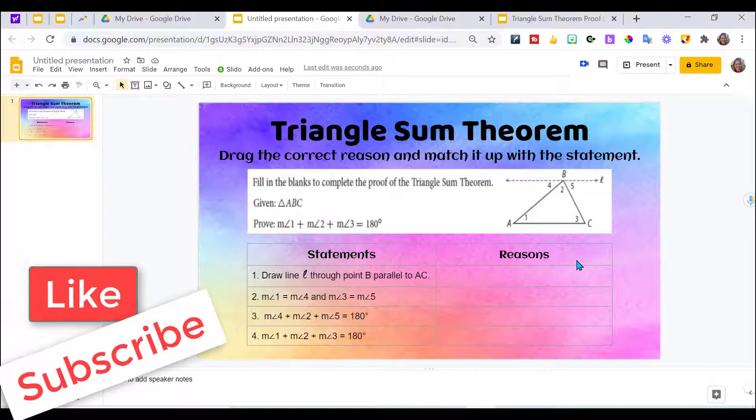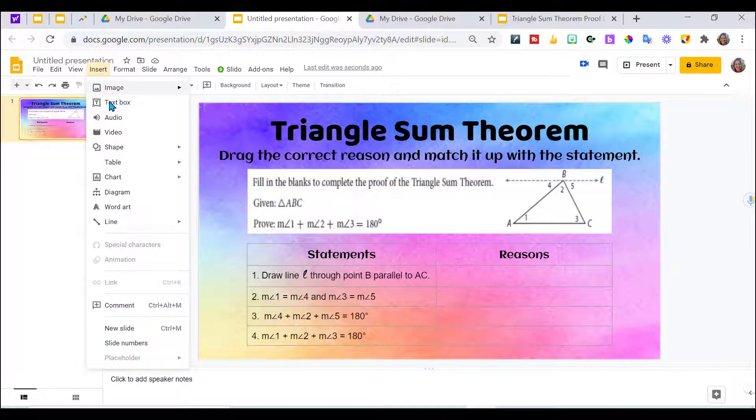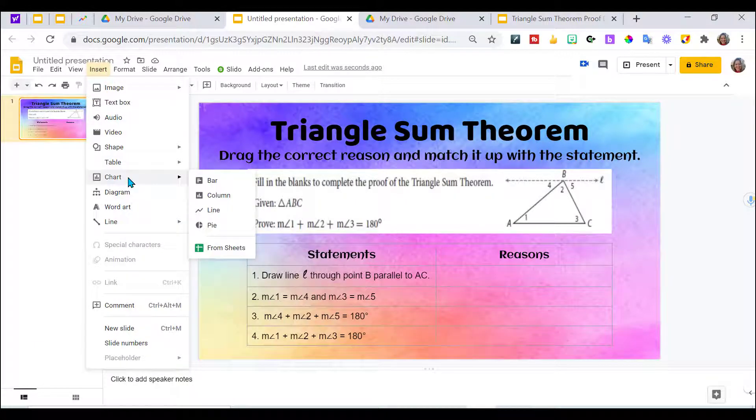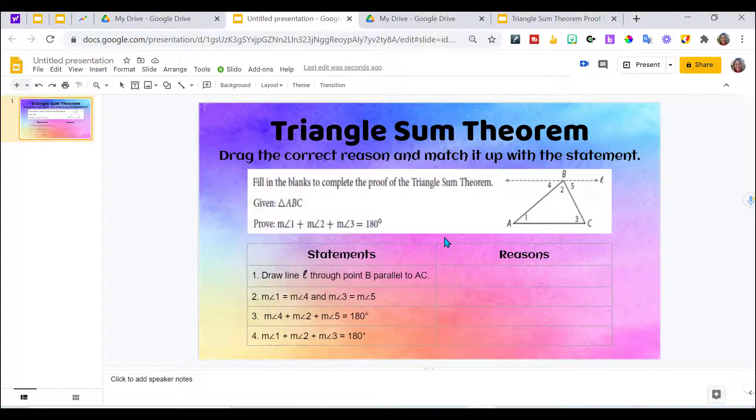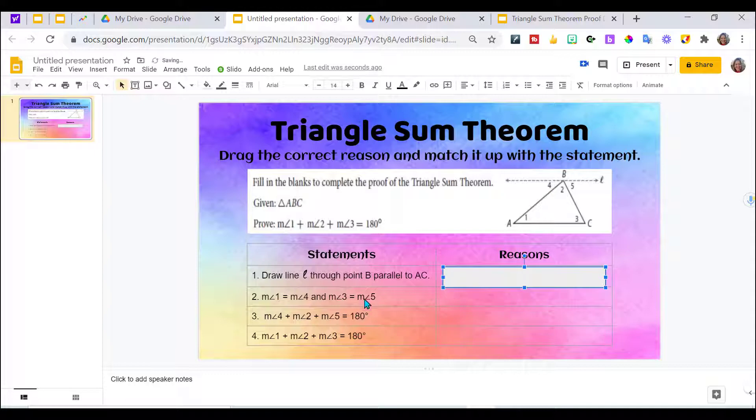So now I just need the reason. So what I'm going to do is I'm going to create the boxes that they will drag and drop into place. So choose a shape. And I'm going to create it the same size as my box. And I want the color of these to be this yellow color. I kind of like that.